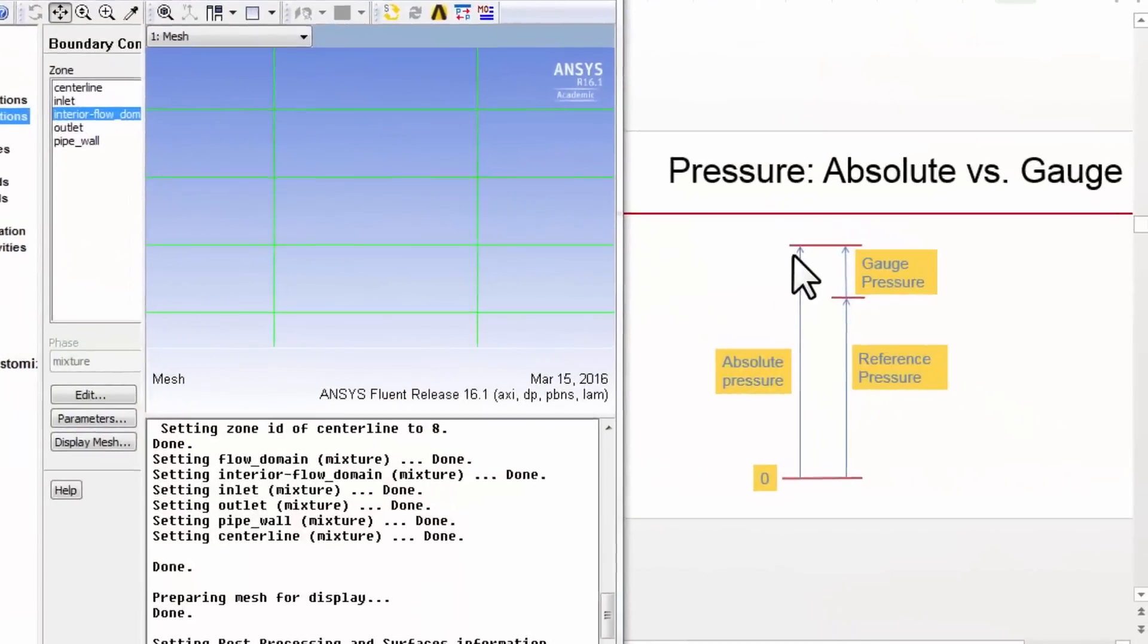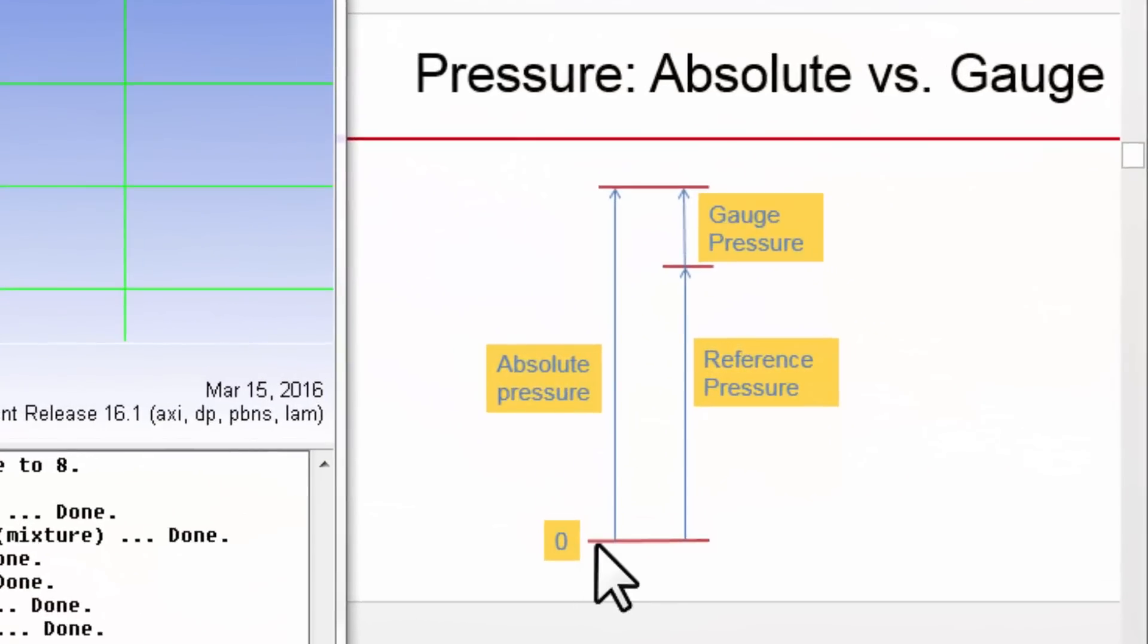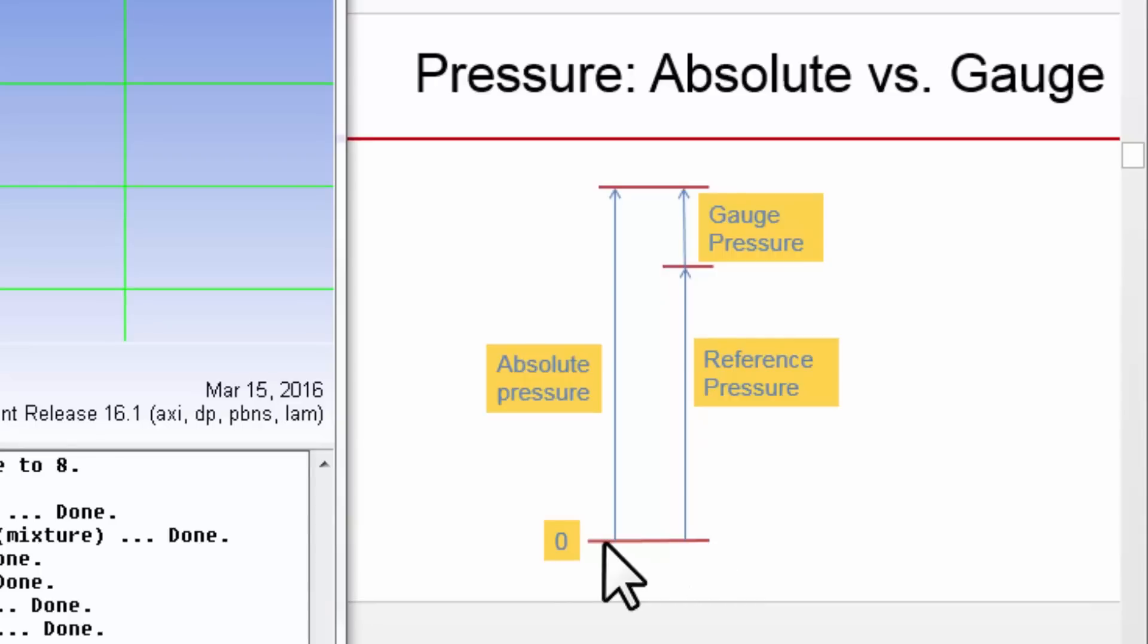If I look at this graphic here, this represents absolute zero pressure, that's perfect vacuum, and the absolute pressure is the pressure measured with respect to absolute zero or perfect vacuum. And that can be a big number. For atmospheric pressure, it's of the order of 10 to the power of 5 in Pascals, and that's a big number.